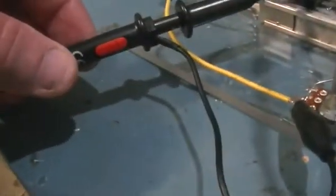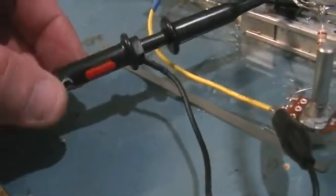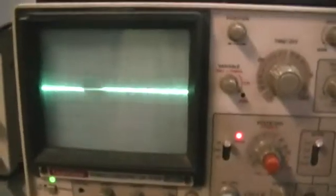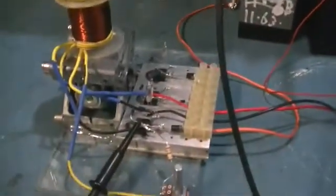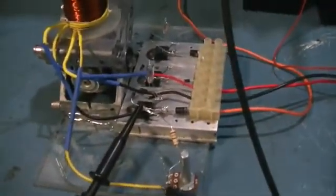We are set on the 10 times on the probe. Our scope of course is zeroed in on the zero volt line. So we will start her up now and we will see what is happening on the base of the transistors.